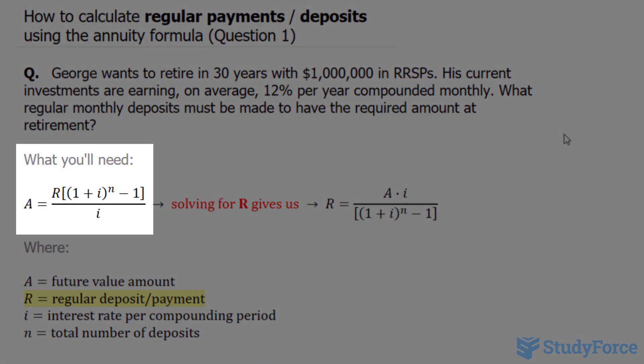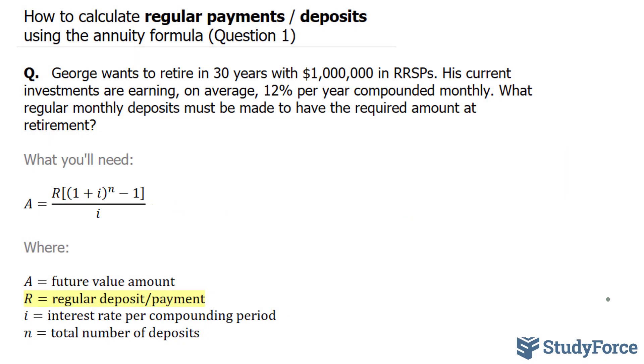To answer this question, we'll need to use this formula. The letters in this formula are defined below where A represents the future value amount and in our case it's 1 million,